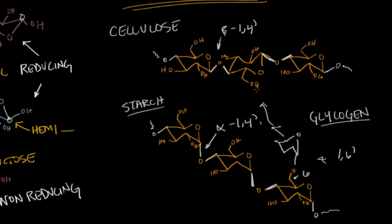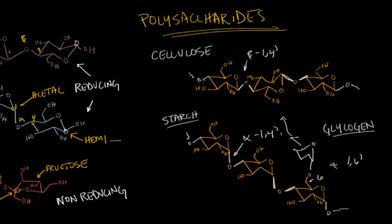So to summarize: cellulose uses beta 1,4 linkages of glucose in a straight chain; starch uses alpha 1,4 linkages of glucose; and glycogen is very similar to starch except that alpha 1,6 linkage branches are added, enabling the formation of highly branched chains of this polysaccharide.